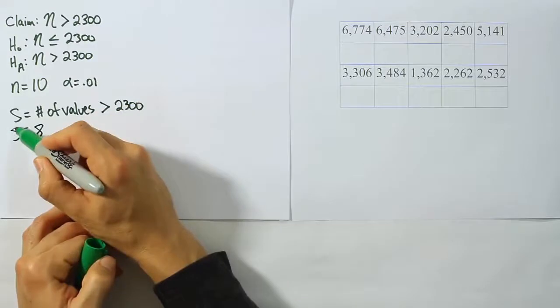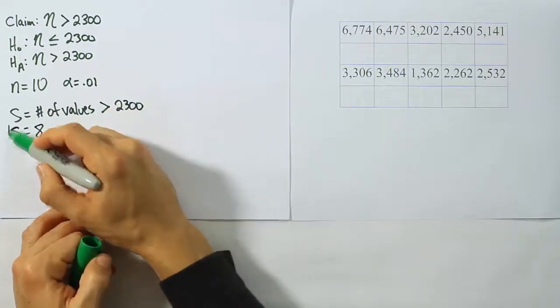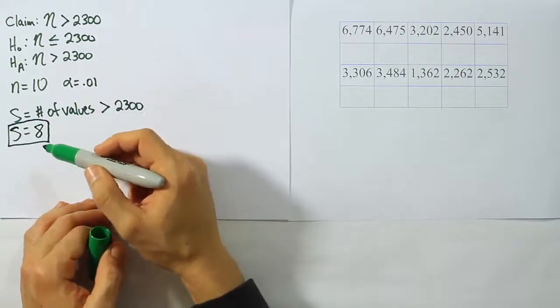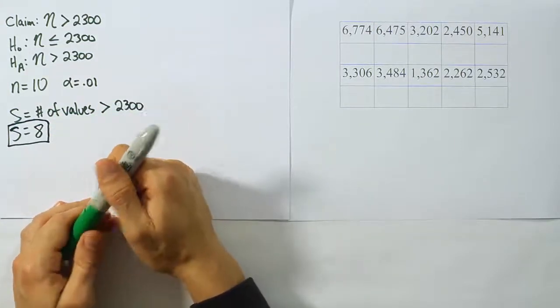So S is equal to eight. So our answer for our test stat then is eight. S is eight. There are eight values that are bigger than 2300. So the ten dishes sampled, eight of them are higher than 2300.